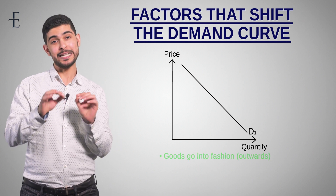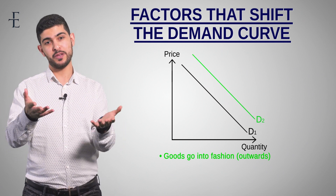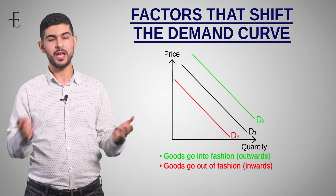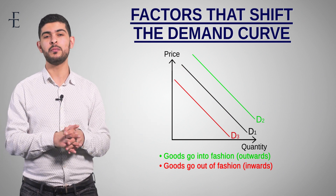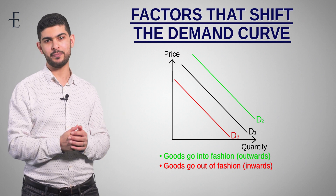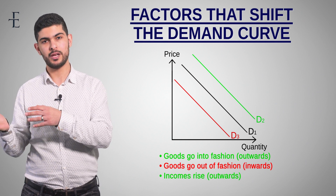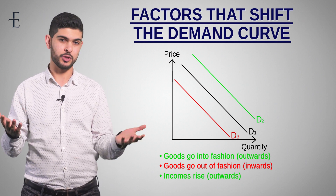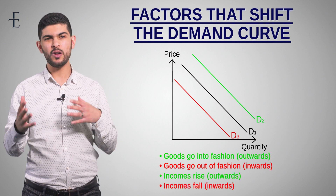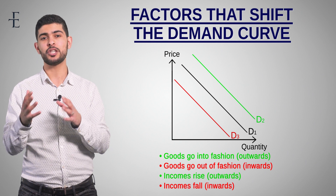If something goes into fashion, the demand for that good shifts out. If something goes out of fashion, the demand shifts in. Number two: another factor that might shift demand — what do I need in order to buy goods and services? I need money. So if my income goes up, my demand shifts to the right, outwards. If my income goes down — say I lose my job — then my demand curve shifts inwards.